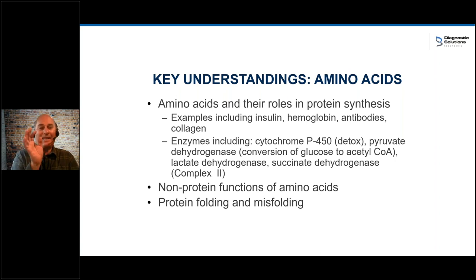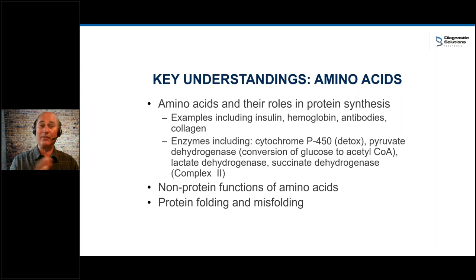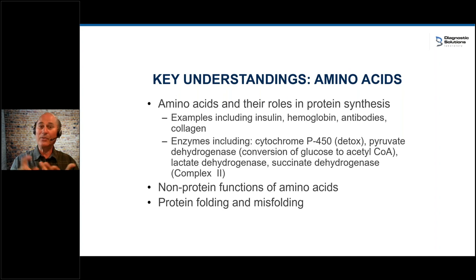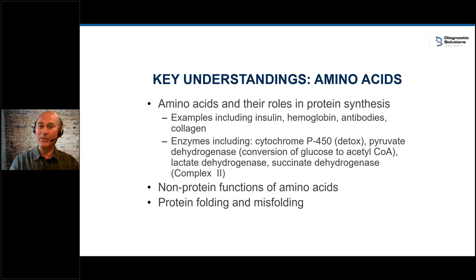The second thing to examine, once we look at the B vitamin markers, would be amino acids. Amino acids are really important for individual reasons, and critically important for their roles in protein synthesis. When your body makes proteins, you need 20 amino acids. If you're going to make insulin, hemoglobin, antibodies — maybe you're fighting a viral infection — if you're going to make just about anything in the body, you need all 20 amino acids present. Every enzyme requires all 20.